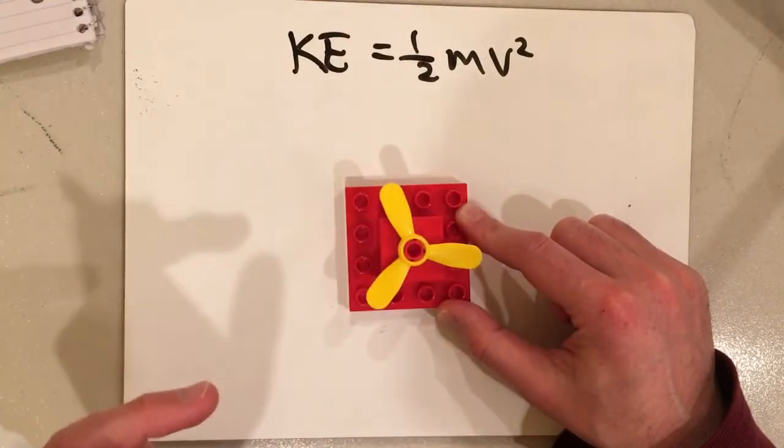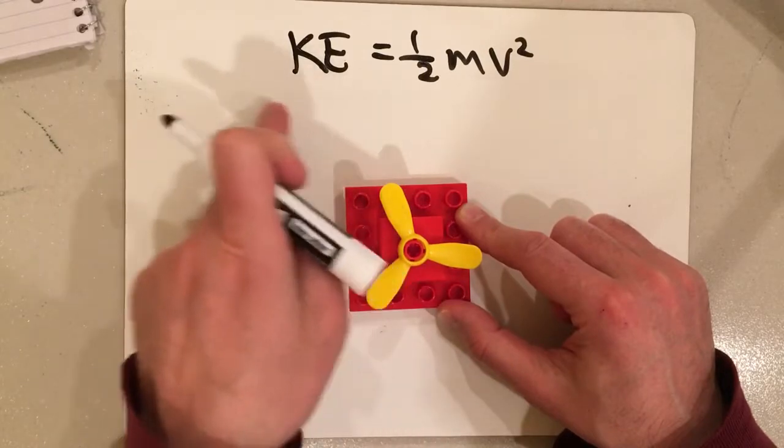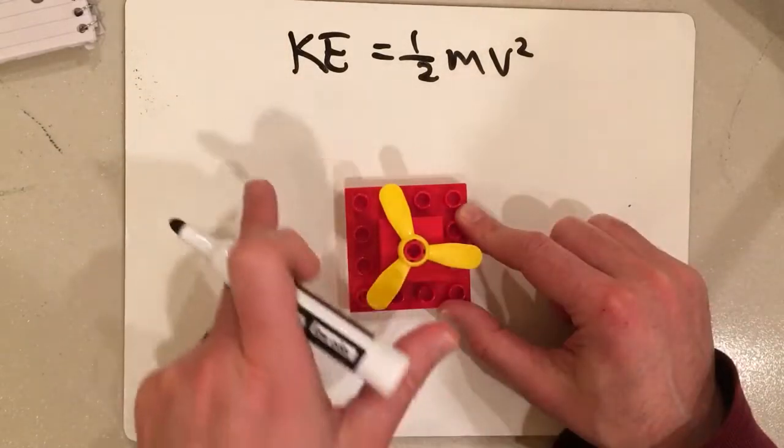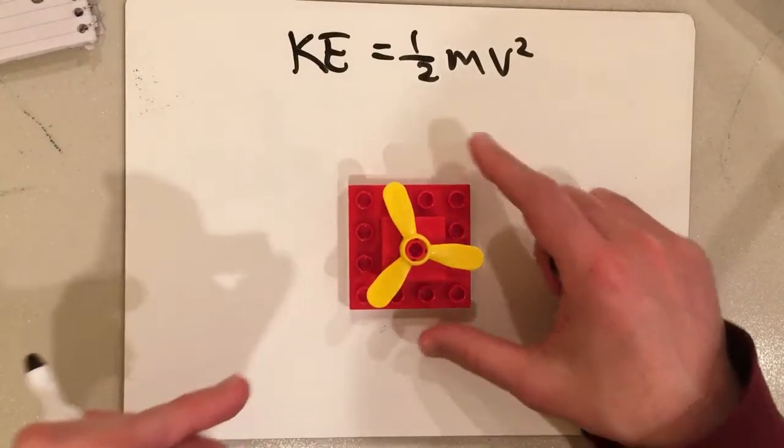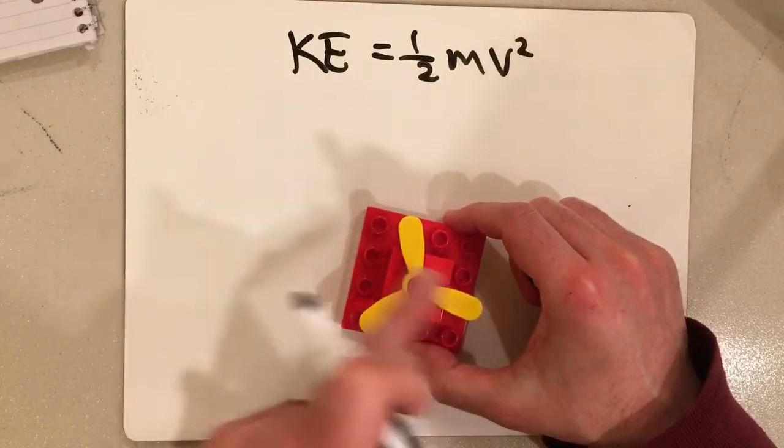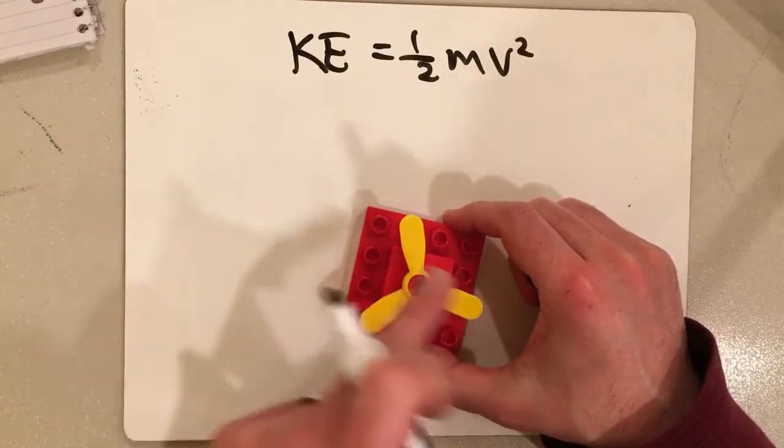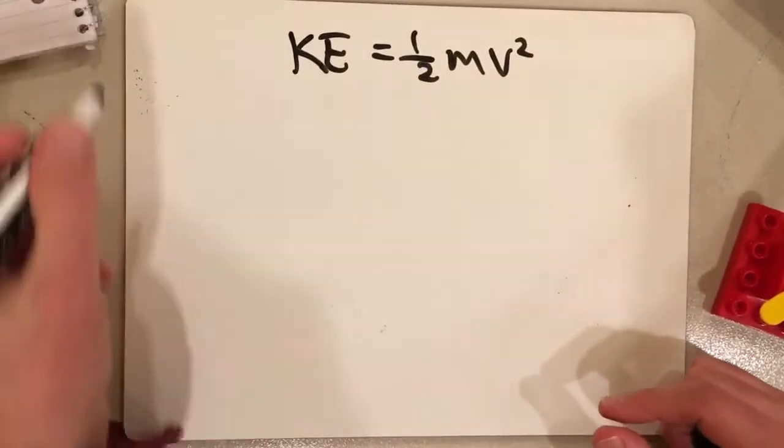And yet, if we use this formula, because the propeller isn't changing its position, it would have no velocity, and this formula would say it has no kinetic energy, which is clearly wrong. So we need to account for this kinetic energy that's due to rotational motion, due to spinning. And so, we have a formula for that.